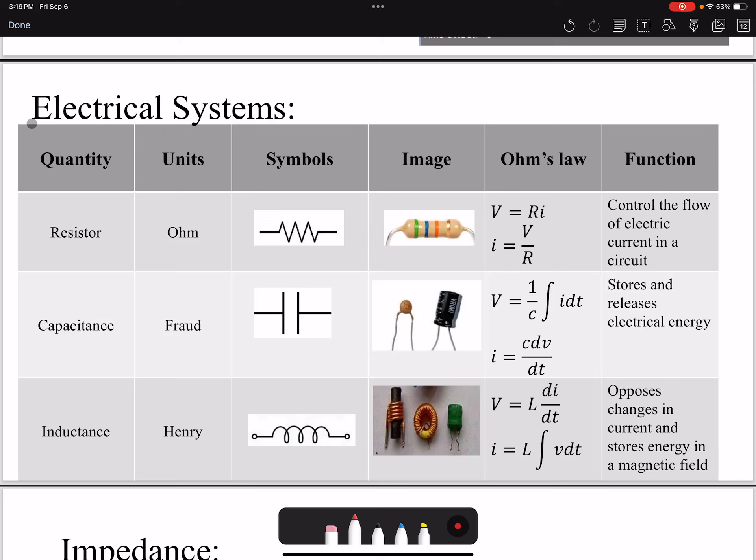Hello everyone, in this video we are going to review electrical systems. We have three main elements in electrical circuits. We have the resistor, the unit for it is Ohm, we show it with this symbol, and that's usually small so we use kilo-Ohm.